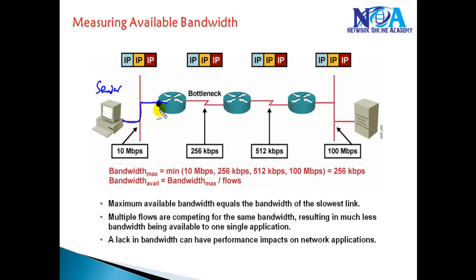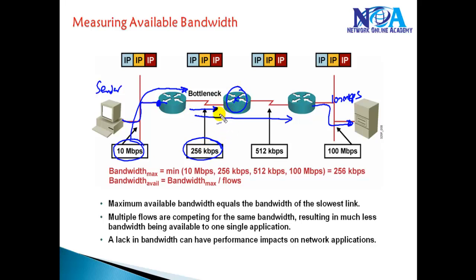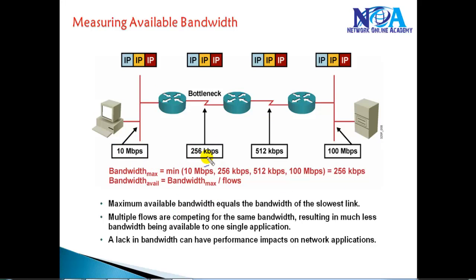The receiver's server can support 200 Mbps. The sender will try to send at 100 Mbps, but on the WAN link we only have 256 Kbps. The router cannot process packets at the LAN speed — it will send at 256 Kbps. The maximum bandwidth between sender and receiver equals the bandwidth on the slowest link.